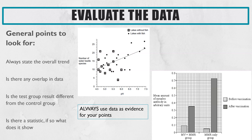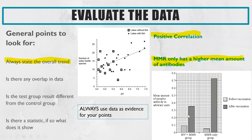Evaluate the data is more commonly asked than evaluate the method. The first mark you will always need to state is the overall trend, which is evidence for the conclusion. In one example the overall trend is a positive correlation, and in another the overall trend shows a difference — the MV plus MMR group is lower than the MMR only group, meaning MMR only has a higher mean amount of antibodies.